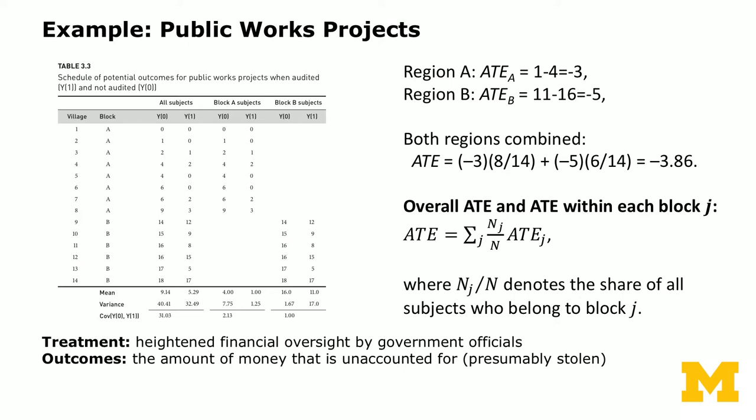With both regions combined, you weigh the mean by the proportion of subjects in each condition. With 14 subjects total — 8 in region A and 6 in region B — you weight the average treatment effect in each region by its proportion, giving an overall ATE of minus 3.86. When you have blocks, the overall average treatment effect is the sum of the weighted within-block average treatment effects.